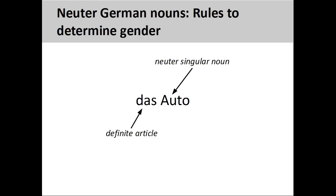The German noun Auto, meaning car, has a neuter grammatical gender, so its definite article is das. Don't forget that it is important to memorize the definite article with the noun.